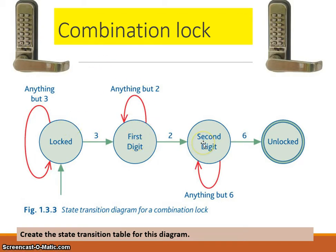Entering another digit correct, and then another digit correct, eventually we end up in the unlocked state. This is shown as a double circle, known as an accepting state — a state that identifies that an input has been accepted.